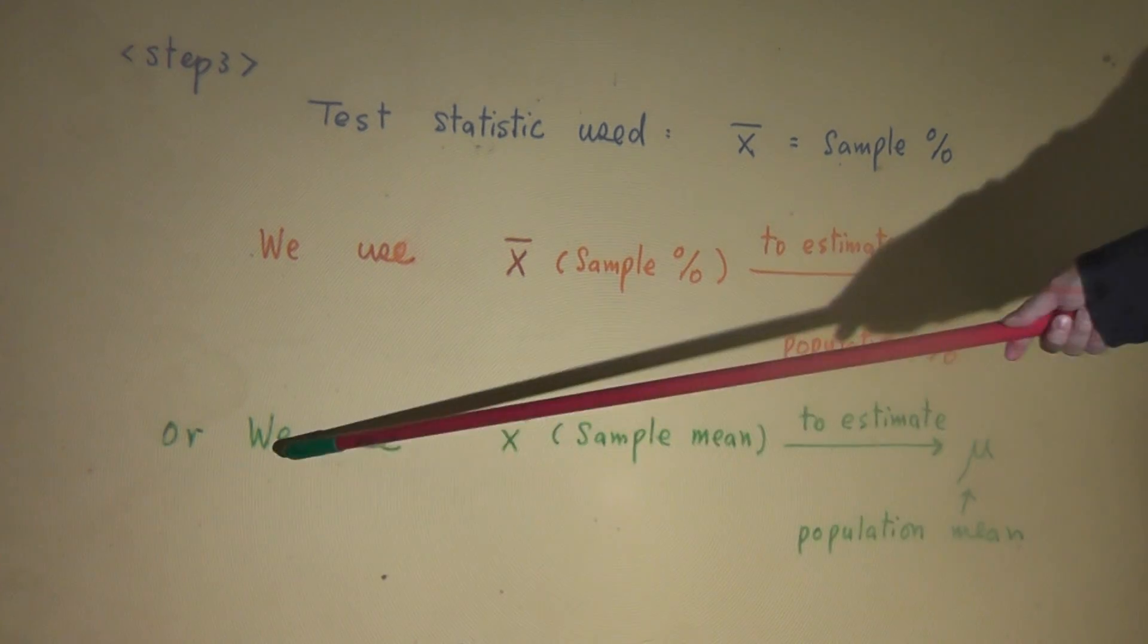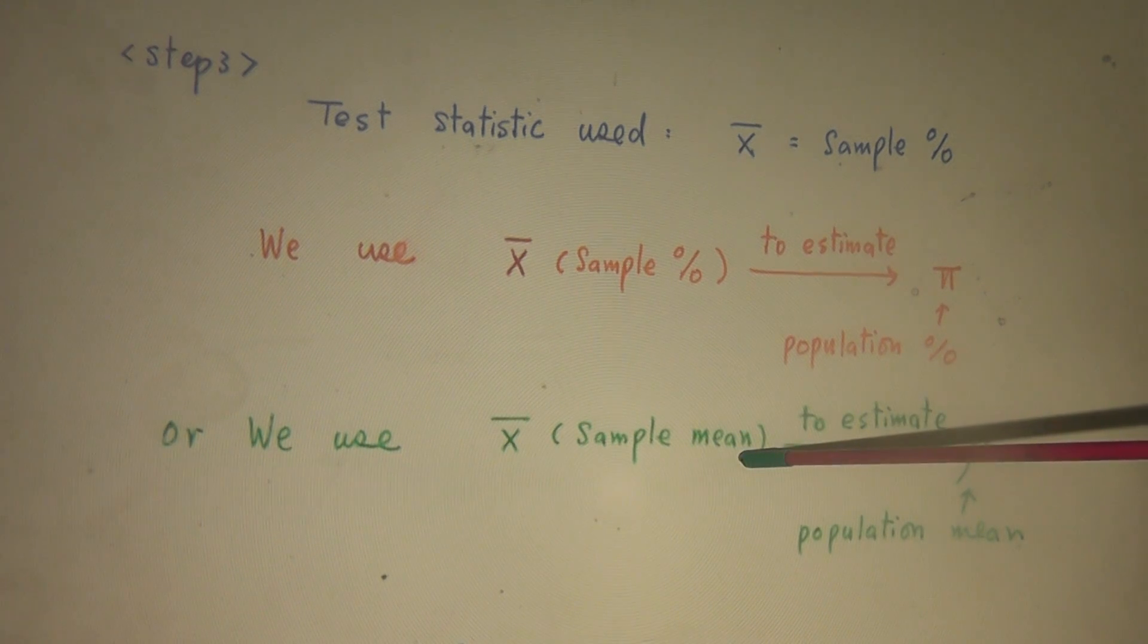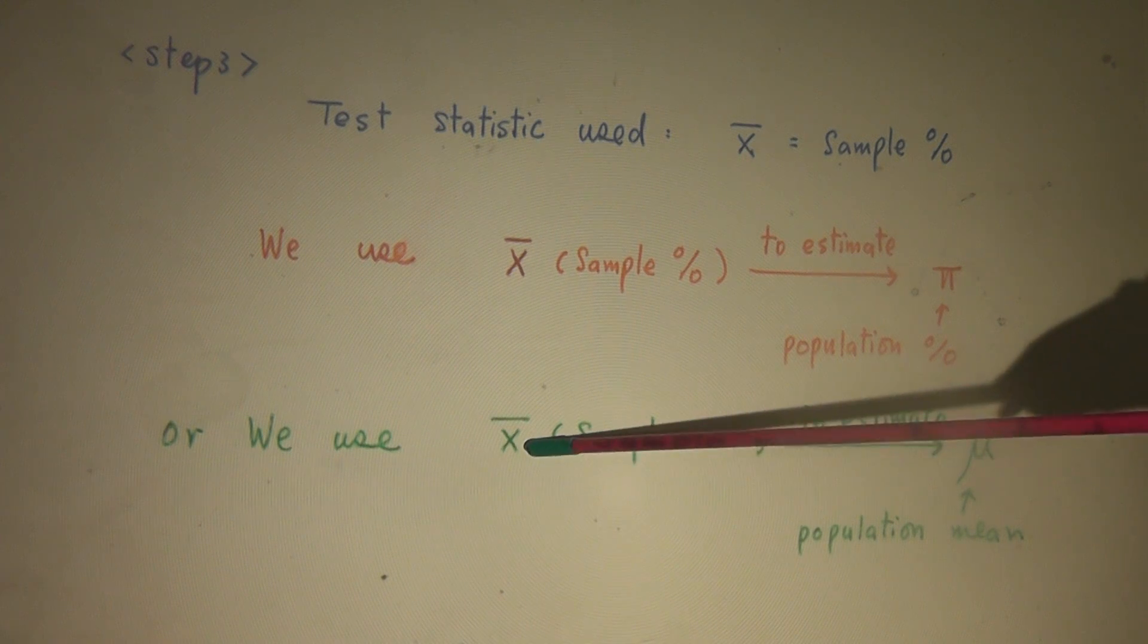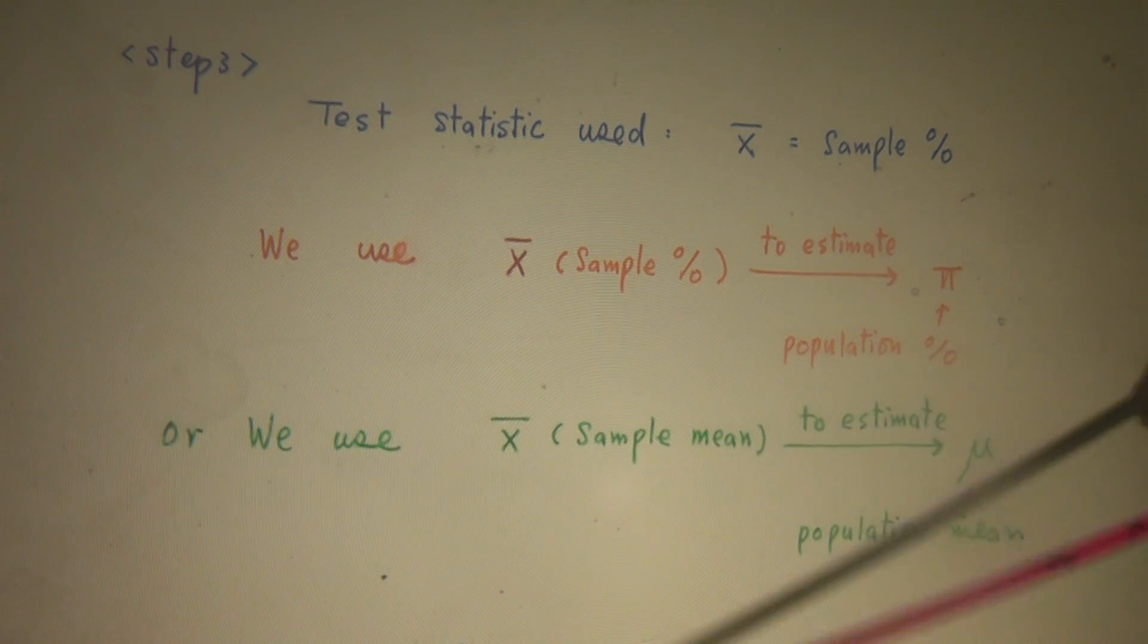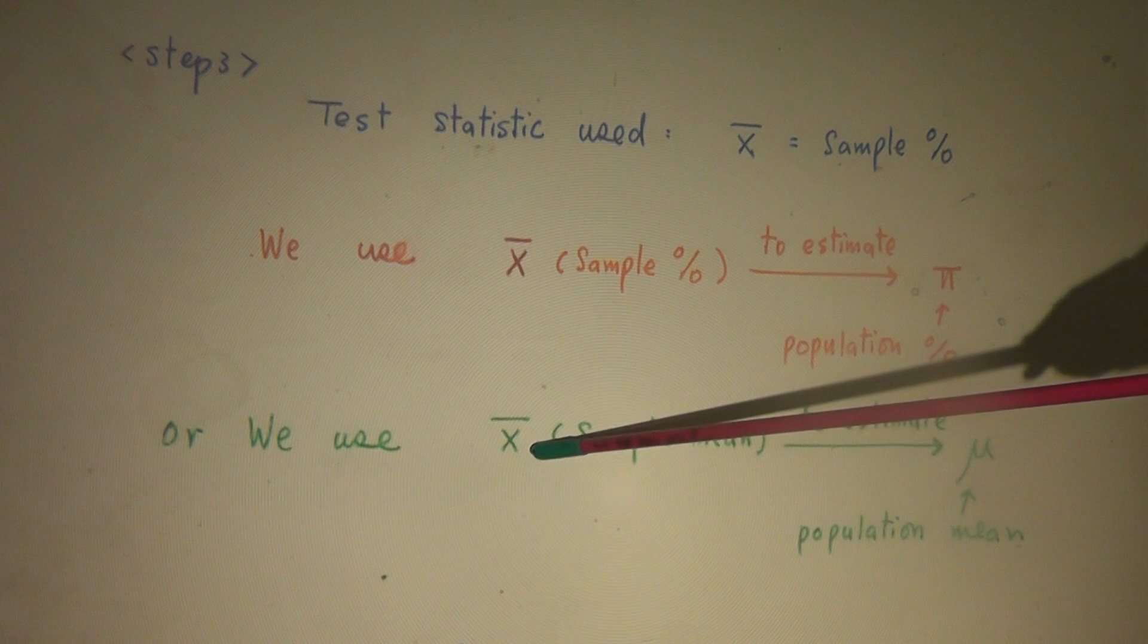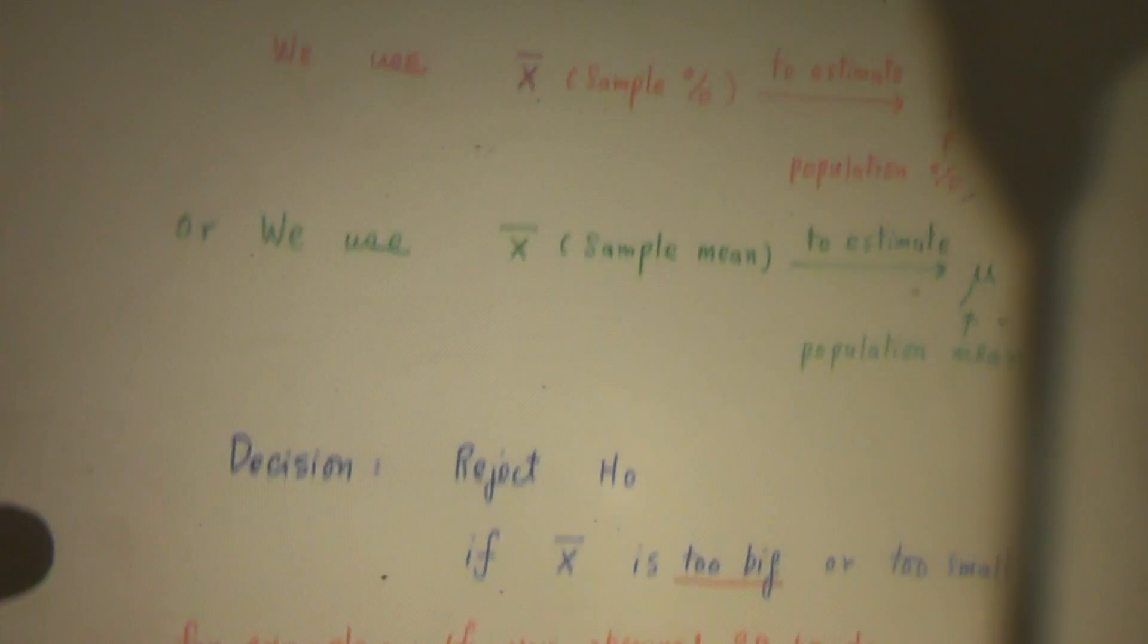Or we use x-bar, the sample mean. This is x-bar sample mean when the x-k are not Bernoulli random variables, or in some basic statistics books they say when we deal with non-zero-one box or not a count box, to estimate mu, the population mean.